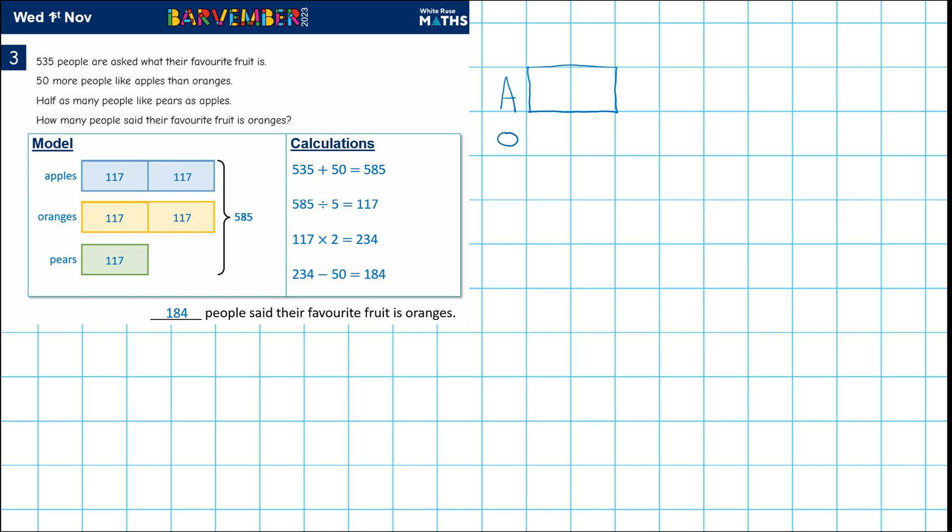And then we need to draw a bar for oranges. And what did they say? That 50 more people like apples than oranges. So, and what they've done is they draw a bar for oranges.